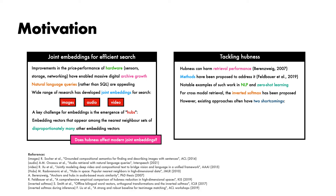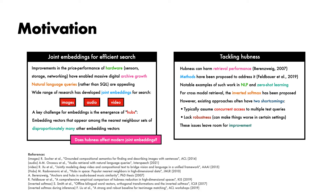However, existing approaches to tackling hubness for cross-modal retrieval often have at least one of two shortcomings. Typically, they assume concurrent access to multiple test queries, which may not always be practical when deploying a search system, and lack robustness in the sense that they can make retrieval performance worse when applied naively across unfavourable data distributions. Since these issues indicate some room for improvement, the question arises of whether we can find a more practical solution to addressing hubness.